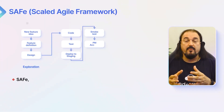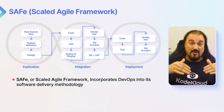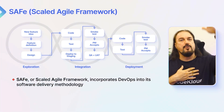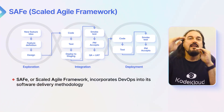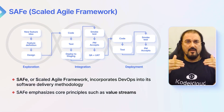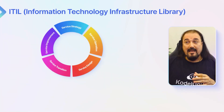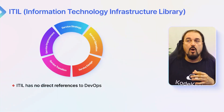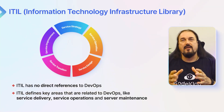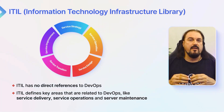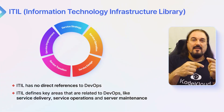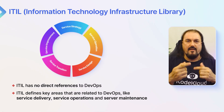SAFe, or Scaled Agile Framework, incorporates DevOps into its software delivery methodology. When it talks about core delivery — aligning strategy to tactics across an entire organization — one of its cores is about value streams, and part of that core is also DevOps. ITIL is interesting because it has no direct references to DevOps, yet it defines key areas related to DevOps like service delivery, service operations, and maintenance. Those processes actually have to be incorporated into DevOps to see the flow and achieve the quality improvement that DevOps asks for.